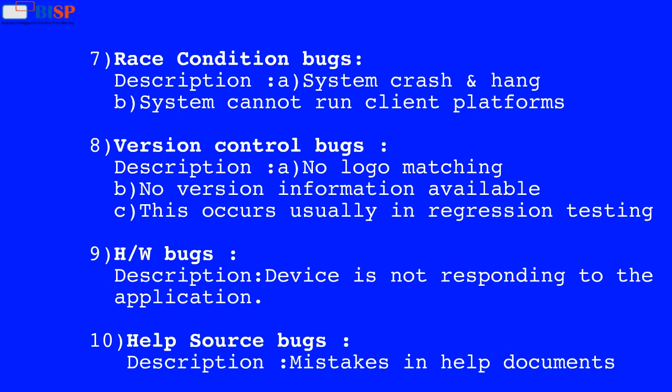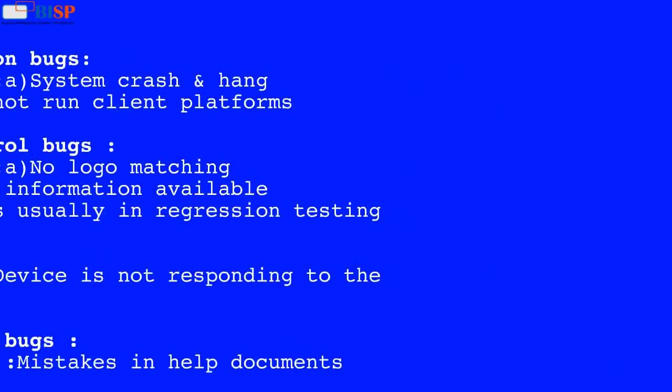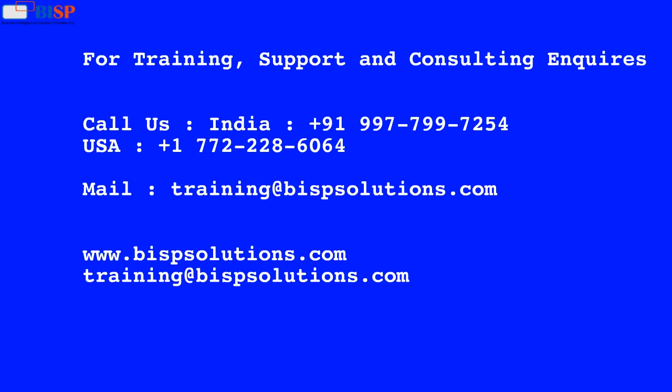8. Version control bugs. Description: A. No logo matching. B. No versioned information available. C. This occurs usually in regression testing. 9. Hardware bugs. Description: Device is not responding to the application. 10. Help source bugs. Description: Mistakes in help documents.